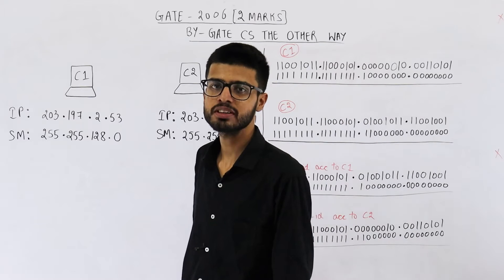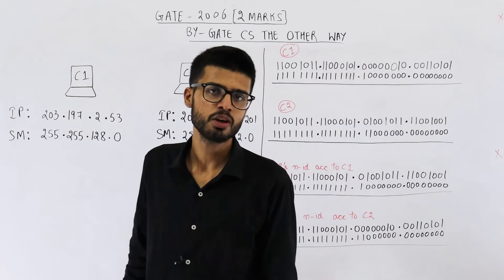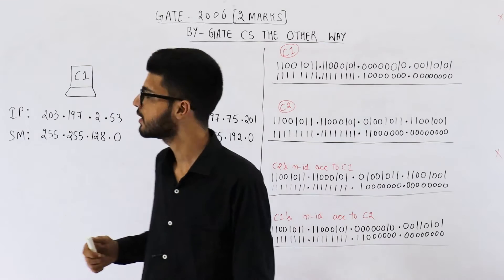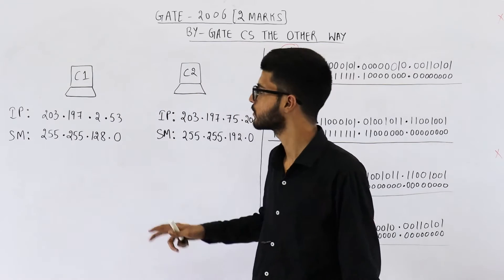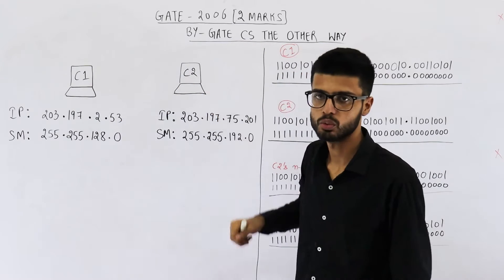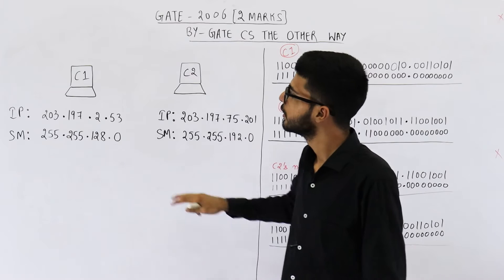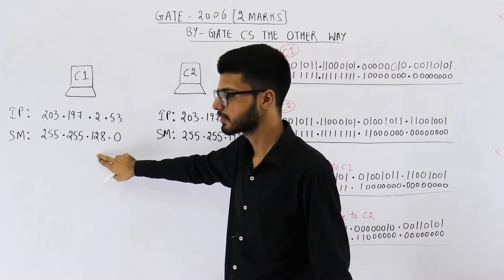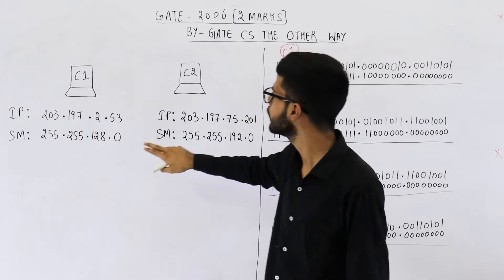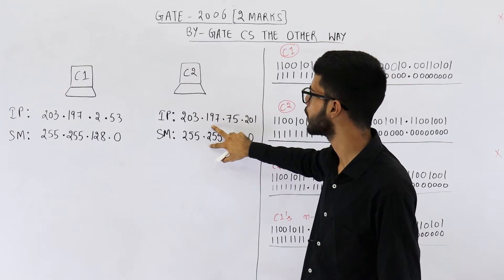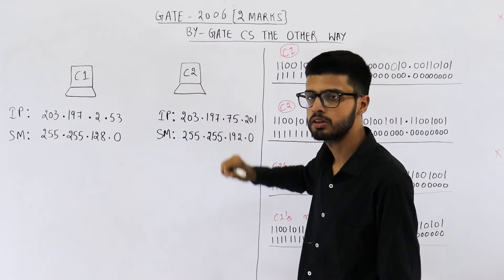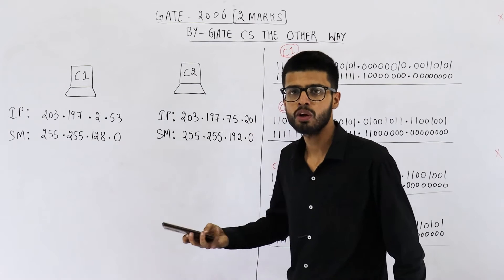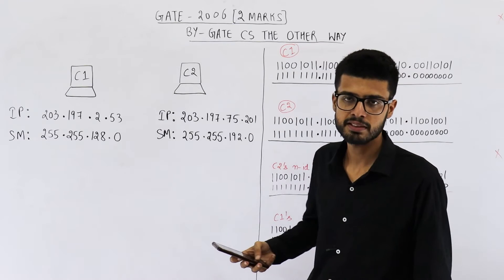Hello students, welcome back. The question is from the 2006 exam and is for two marks. We have two computers C1 and C2. The IP address and subnet mask for C1 is given, and parallelly the IP address and subnet mask for C2 is also given. We need to determine which of the following four statements is true.